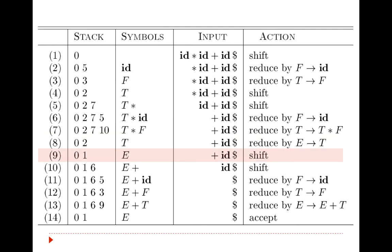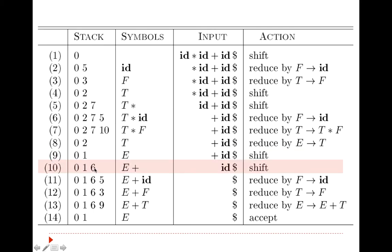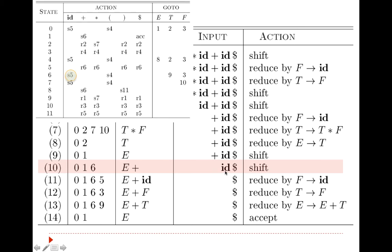Then it is 1 and plus. 1 and plus gives shift 6. So plus is shifted and state 6 is pushed onto the stack. Then the next is 6 and id. 6 and id is shift 5, so id is shifted onto the stack and state 5 is pushed onto the stack as well.